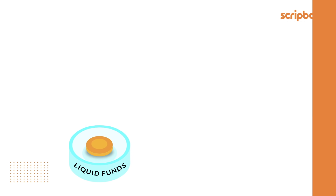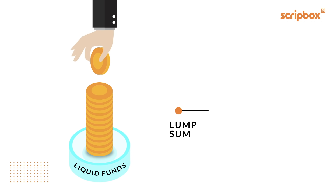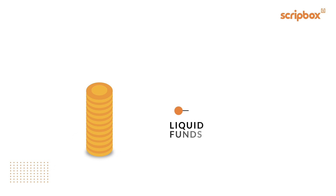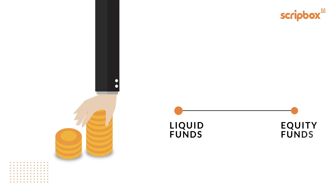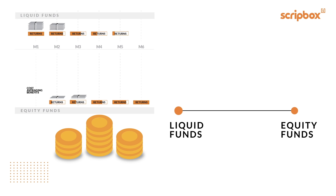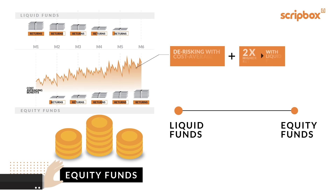Here's how. Your lump sum amount is first invested into liquid funds, then staggered and moved to equity funds over a specified time frame. This de-risks your investment and gives you cost averaging benefits. Also, liquid funds give you returns that are two times better than a savings account.